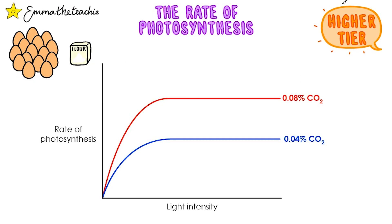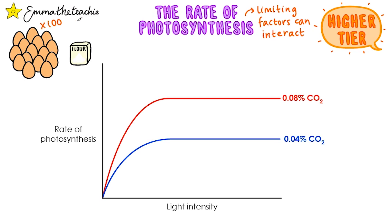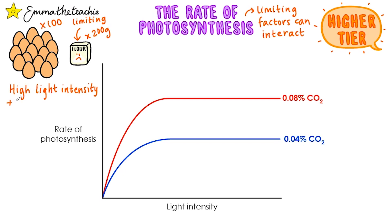This next bit is higher tier content only. If you're studying foundation, skip to the quick questions at the end. Limiting factors can and do interact with each other, so it's important to be able to identify which factor is limiting the rate of photosynthesis. For example, if you were making a cake and had 100 eggs but only 200 grams of flour, then the flour is limiting the size of the cake and is our limiting factor. It works the same way for photosynthesis — if a plant receives a high light intensity but has a low concentration of carbon dioxide, then overall the rate of photosynthesis will be low because the carbon dioxide concentration has limited it.